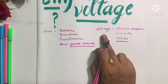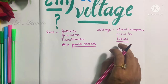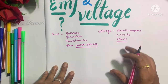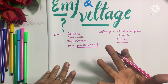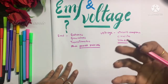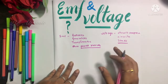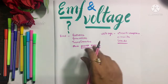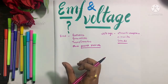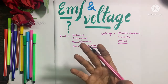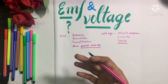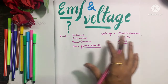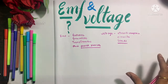EMF is a term used when we speak about power sources, whereas voltage is a term used when we speak about loads. Basically, voltage is something which is not generated, whereas EMF is something which is generated. In other words, EMF is a term used for potential difference generated within the source, whereas voltage is a potential difference between any two points in the circuit.